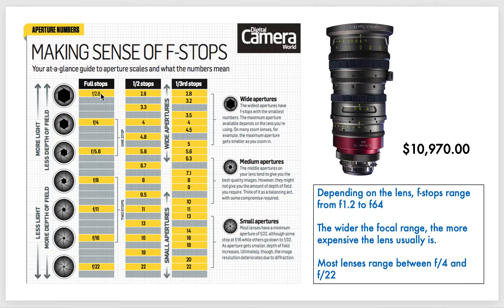So when we talk about a full stop, you can see one stop means when we go between the full stops. So when we go between f2.8 and f4, that is a full stop — halving to go from f2.8 to f4, or doubling to go from f4 to f2.8. And the same is true through any of these.